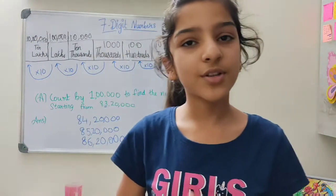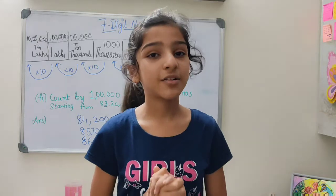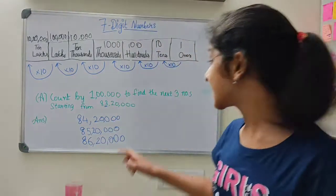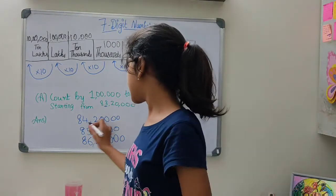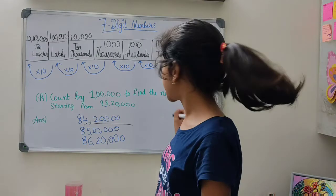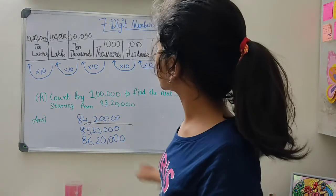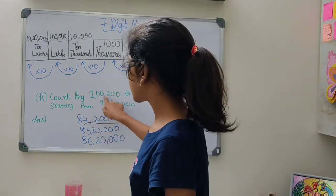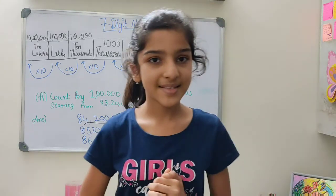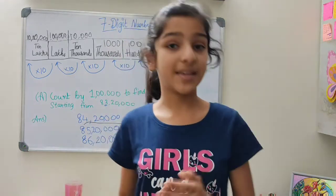Now the next topic we are going to learn about is the Indian and international systems. When we write a number in the standard form — a standard form is a way of writing a number using digits — it can also be written in words or in expanded form. In a standard form, you'll notice commas. These commas separate the number into parts called periods. Periods help us read a number easily.